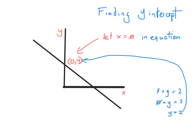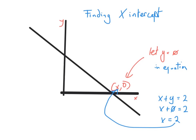Now do the same for the x-axis. At that point, y equals 0, so substitute 0 for y: x plus 0 equals 2, therefore x equals 2. So this point is (2, 0). The rule is easy to remember: to find where a line cuts the x-axis, let y equal 0; to find where it cuts the y-axis, let x equal 0.